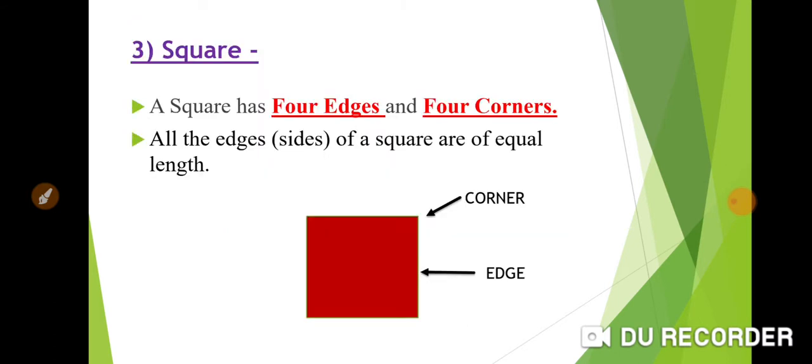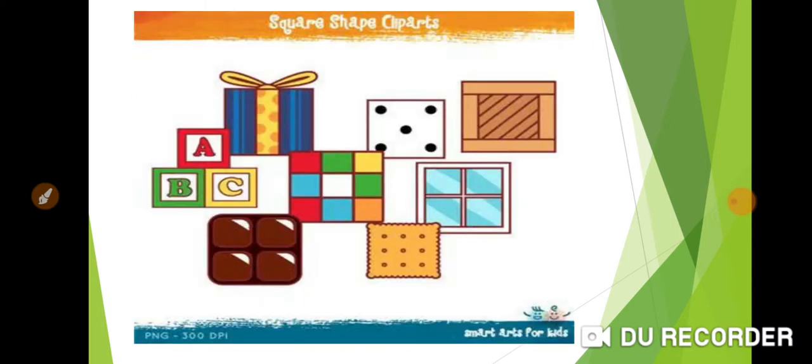Square. A square has four edges and four corners. All the edges of a square are of equal length. That also you can see in this picture.